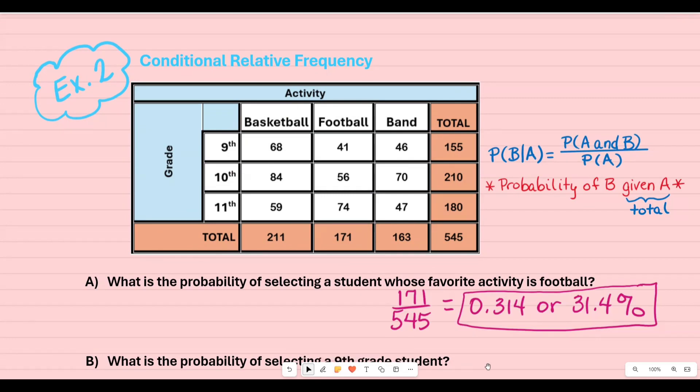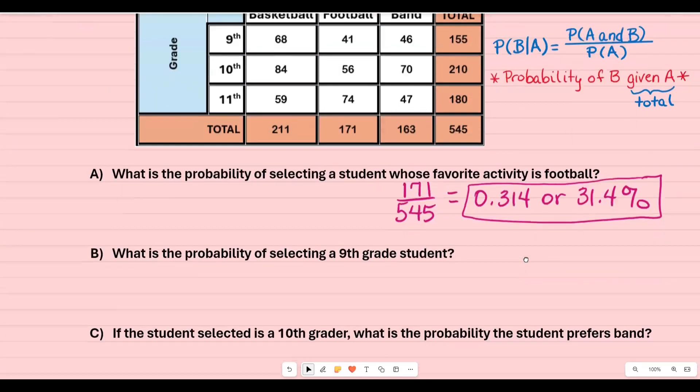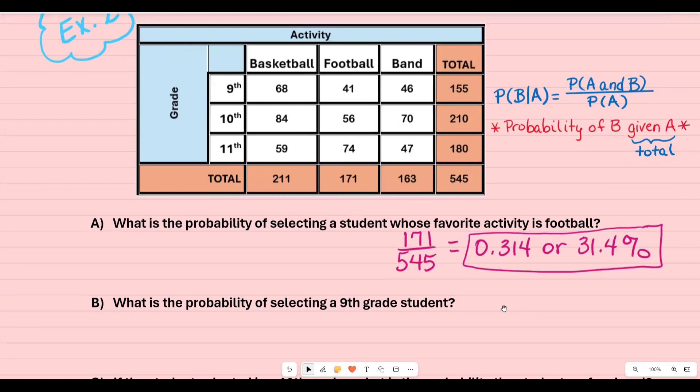Part b, what is the probability of selecting a ninth grader? I still am looking at all of the students. Think of it like if I had a hat and I had 545 names in it. What would be the likelihood that I'm going to select a ninth grader? Then I'm going to go to ninth grade and I'm going to look at how many ninth graders do I have total. I have 155 out of the entire student population of 545. So that's how you set it up.